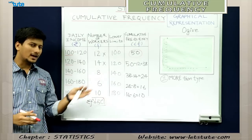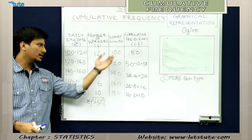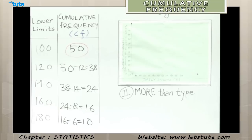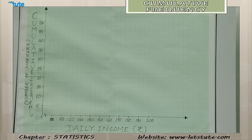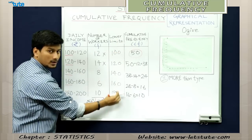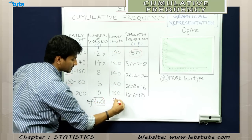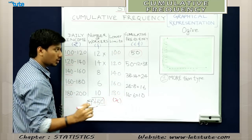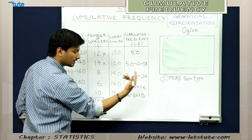Now that we have calculated the cumulative frequencies and know the lower limits, we shall plot these in a graph. As usual, the cumulative frequency is a dependent variable, so it will fall on the y-axis. The lower limits are derived from the daily income group, which is an independent variable, so it falls on the x-axis. We plot lower limits on the x-axis and cumulative frequencies on the y-axis.